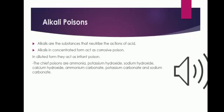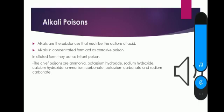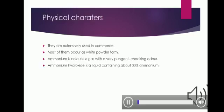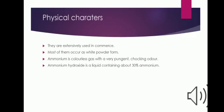In alkali poisoning, the chief poisons are Ammonia, Potassium Hydroxide, Sodium Hydroxide, Calcium Hydroxide, Ammonium Carbonate, Potassium Carbonate, and Sodium Carbonate. In the next slide, we will see about the physical characteristics of alkali metals.